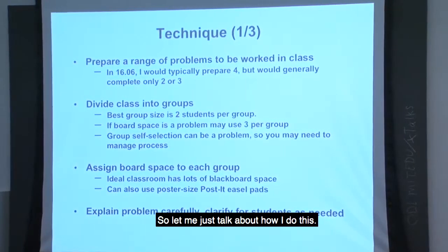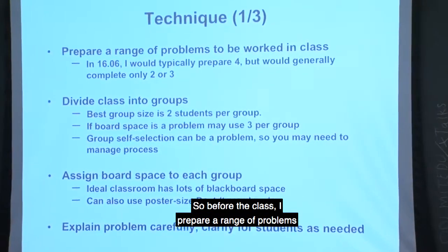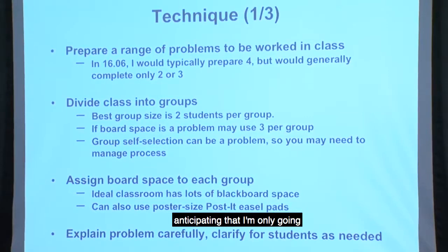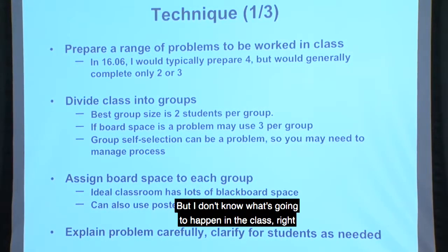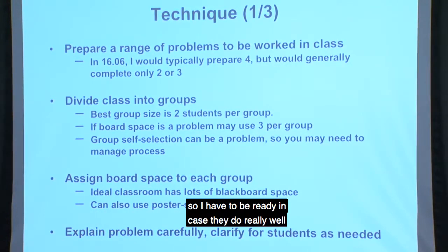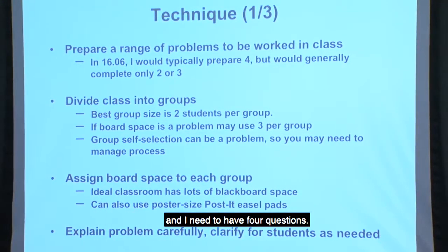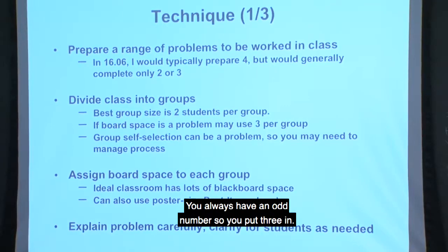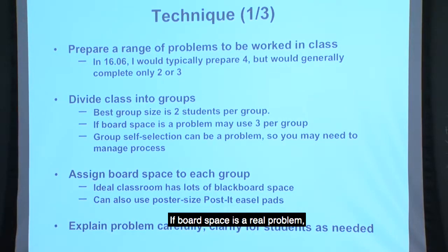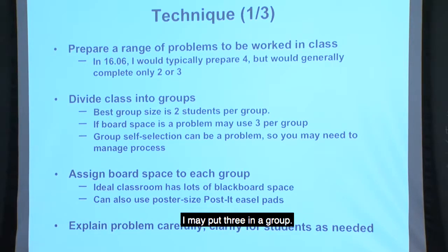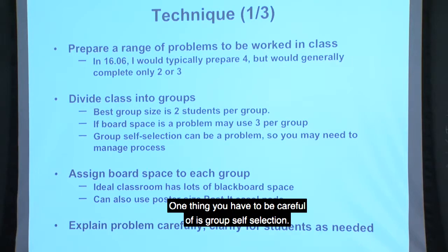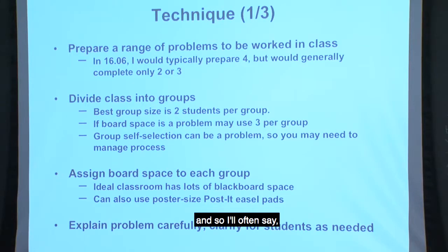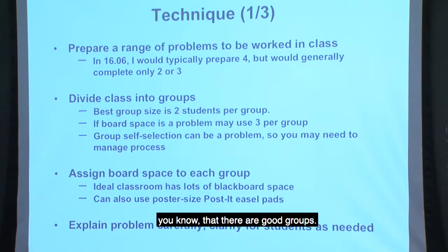Here's how I do this. Before class I prepare a range of problems — I might prepare four problems anticipating I'll only get through two or three, but I have to be ready in case they do really well. I divide the class into groups; the best size is two students per group, though you always have an odd number so you put three in. One thing to be careful of is group self-selection — you sometimes have weaker students shunted together. So I'll often say work with someone you've never worked with before, or I'll count out the students to make sure there are good groups.